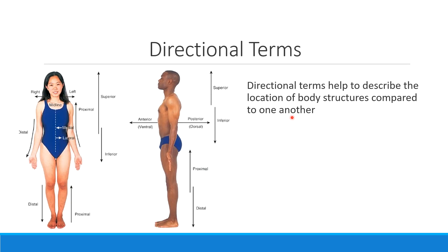Anytime we're going to use a directional term, it's going to include us comparing one bone to another bone or one organ to another organ. We can never use a directional term by itself — they're always relative to each other. When we talk about directional pair terms, we're always going to see them coming in pairs, and these pairs are going to be opposites. For example, there's a term that means closer to the front side of the body, but also a term that means closer to the back side, or a term that means above and a term that means below. Study pro tip: learn the pairs or sets of words that come together.